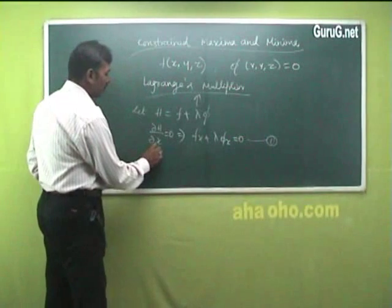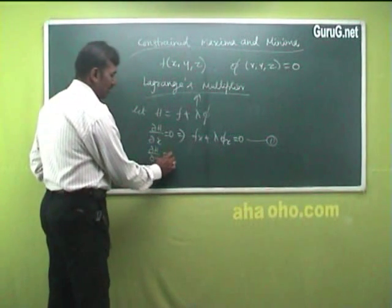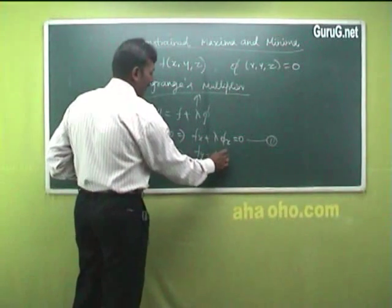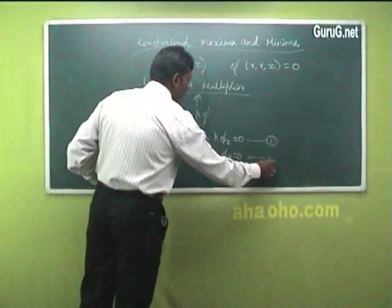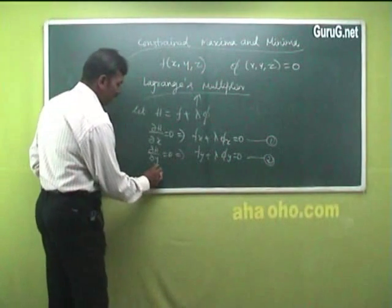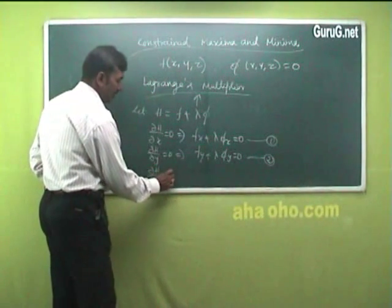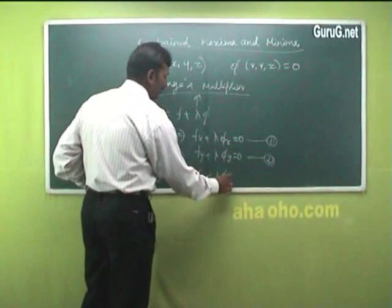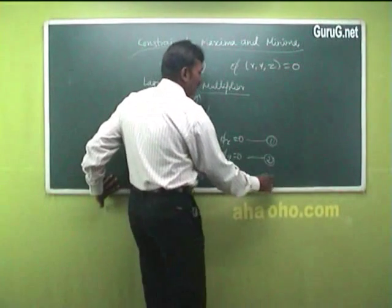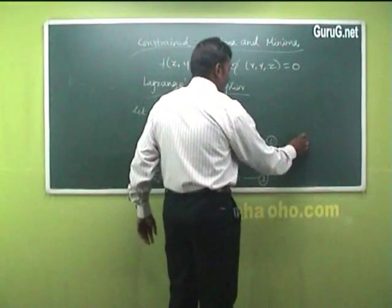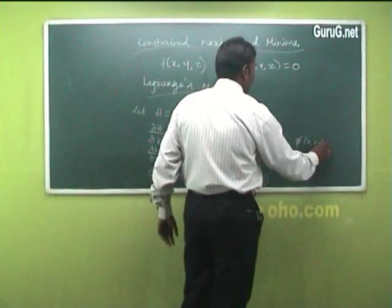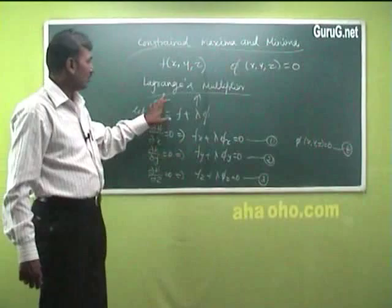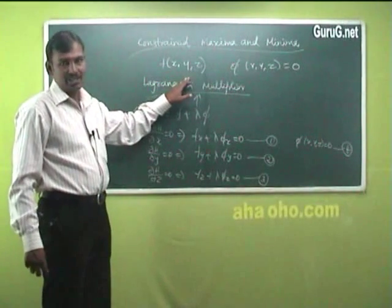Then ∂h/∂y = 0, which gives f_y + λ·φ_y = 0 — this is equation 2. Then ∂h/∂z = 0, giving f_z + λ·φ_z = 0. And the fourth condition is the relation φ(x, y, z) = 0. These four equations are called the necessary conditions for the function to be extremized.